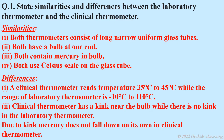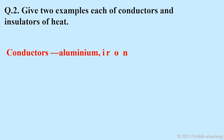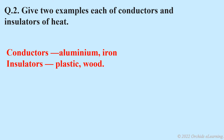Due to the kink, mercury does not fall down on its own in a clinical thermometer. Give two examples each of conductors and insulators of heat. Conductors: aluminum and iron. Insulators: plastic and wood.